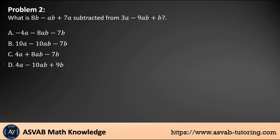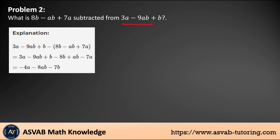Problem number two: what is 8b minus ab plus 7a subtracted from 3a minus 9ab plus b? The keyword here is 'subtracted from,' which means you write that term first, then put a negative sign, and put the first term in parentheses. To get rid of the parenthesis, multiply the negative sign through every term inside: 3a minus 9ab plus b becomes, after distributing, negative 8b, positive ab, and negative 7a.